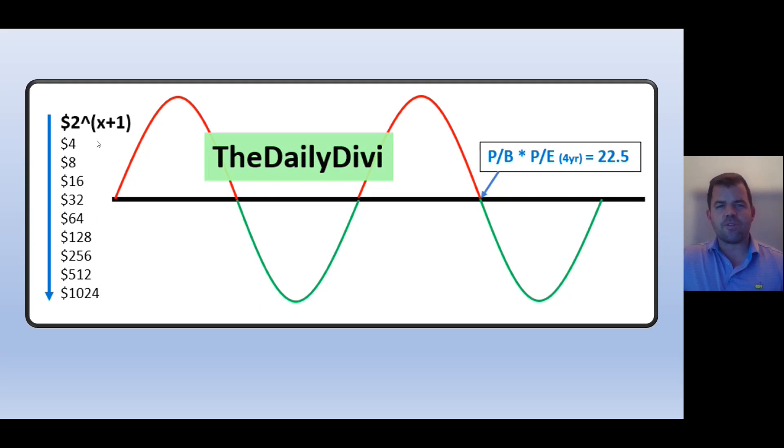Whenever a company is maybe in the 28 range, 30 range, higher than that 22.5, I like to put a very small amount so that I can keep an eye on that company.